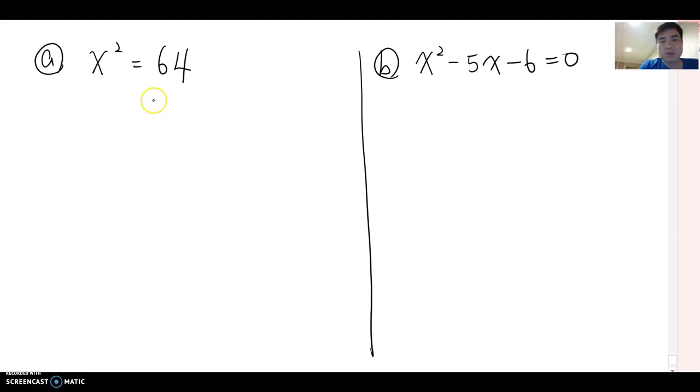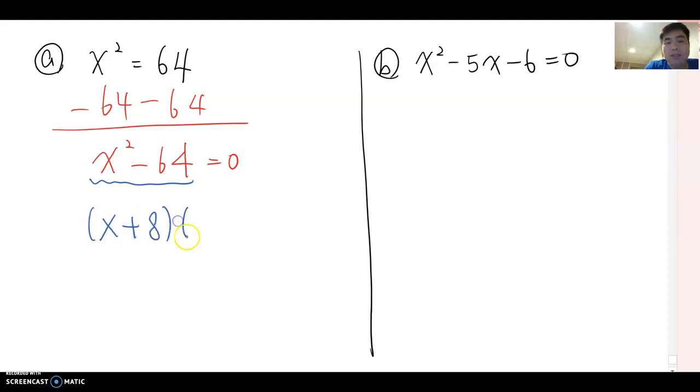So this time I'm going to move 64 to the other side. Then this becomes x squared minus 64 equal to zero. Now, if I temporarily erase equal to zero here and ask you about factoring this one, what kind of factoring method do we have to use? Yes, it's exactly binomial because x squared means x squared, 64 means 8 squared. So I'm going to factor this binomial. Then you will get x plus eight and x minus eight, now equal to zero.